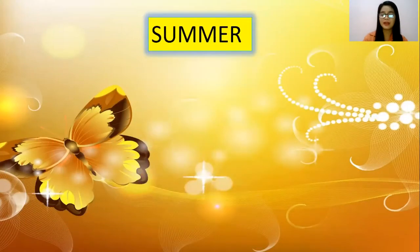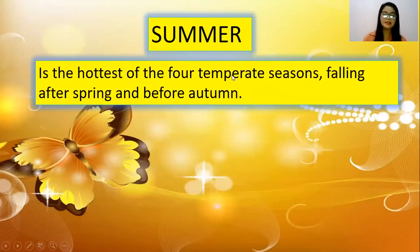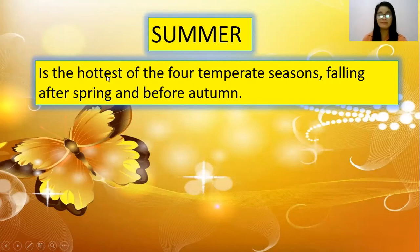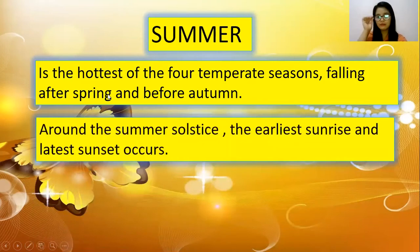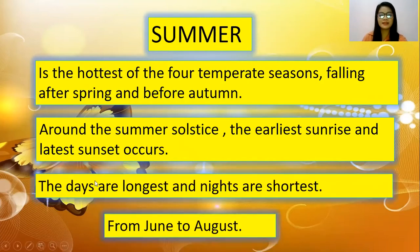The next one is summer. By the way, the spelling of summer is S-U-M-M-E-R. Summer is the hottest of the four temperate seasons, falling after spring and before autumn. Around the summer solstice, the earliest sunrise and latest sunset occurs, so during summer we experience more daylight. The days are longest and nights are shortest. It starts from June and ends in August.